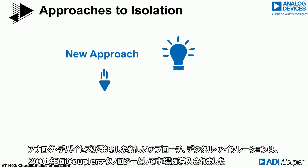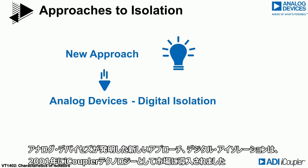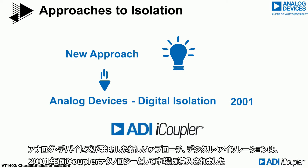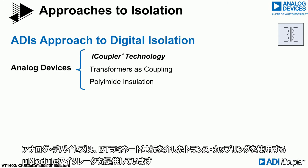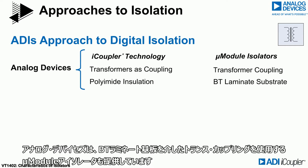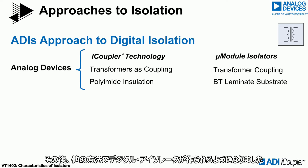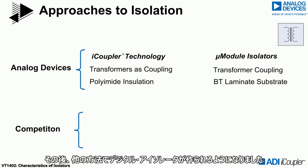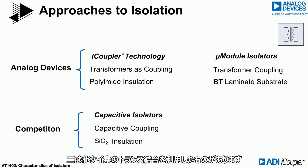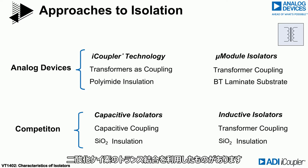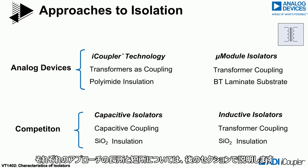A new approach invented by Analog Devices — digital isolation — was introduced to the market in 2001 as i-Coupler technology. These devices use microtransformers fabricated on chip as the coupling element, with polyimide insulation between the transformer coils. Analog Devices also offers micromodule isolators that use transformer coupling through a BT laminate substrate. Over time, other approaches have been used, including capacitive coupling with silicon dioxide and transformer coupling with silicon dioxide. The pros and cons of each approach will be discussed in later sections.